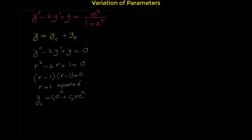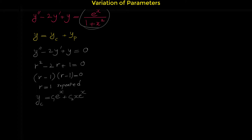Now we are ready to find the particular solution with the method of variation of parameters. Note that you cannot find the particular solution of this non-homogeneous equation with the method of undetermined coefficients, because the right side is not a polynomial, not an exponential function, and not a sine or cosine — it is in fractional form.